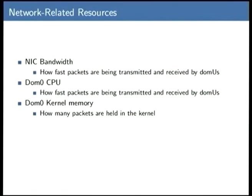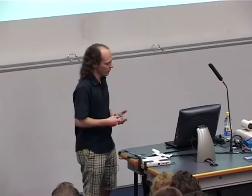What are the resources we need to worry about? There are three: the bandwidth of the NIC itself, which is the obvious one; less obvious but more important is the CPU on the host — DOM0 is what Xen people call the host — and also the memory of DOM0. When a guest sends packets, they have to be processed by the host, consuming host resources. If the host is overwhelmed, it may not be able to service requests for other guests.